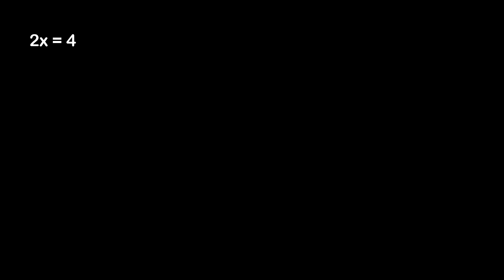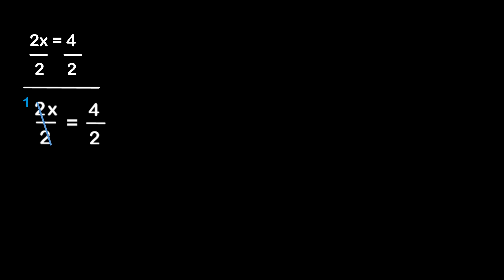What if we have something like 2x is equal to 4? How would we get rid of the 2 in that case? The answer is to divide that side by 2. And remember, whatever we do to one side, we have to do to the other, so we divide the other side by 2 as well. That leaves us with 2 over 2 times x equals 4 over 2. Since 2 divided by 2 is 1, the 2s cancel out, and 1 times x is just x. So we're left with x is equal to 2.